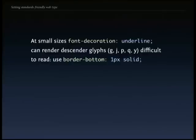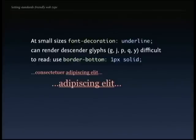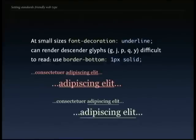Links automatically have an underline, and the problem is underlines cut through descender glyphs like the bottom of p and g, making them hard to read at small sizes. One trick is to use border-bottom with a pixel of padding instead of text-decoration underline. It looks odd at first but is much easier to read, especially for users without good eyesight.